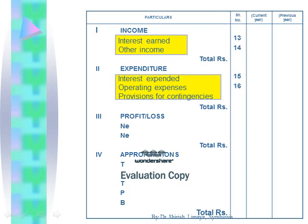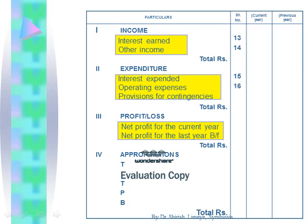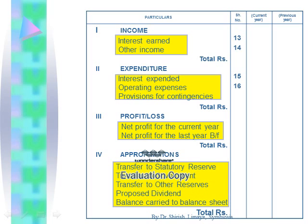The long forms are: I for Interest Earned, O for Other Income. Under the title Expenditure: I for Interest Expended, O for Operating Expenses, P for Provisions for Contingencies. Then under the Profit and Loss title: N-E for Net Profit for the current year, N-E for Net Profit for the last year brought forward. T for Transfer to Statutory Reserve, T for Transfer to Government, T for Transfer to Other Reserves, P for Proposed Dividend. The remaining balance of profit is carried to the balance sheet.